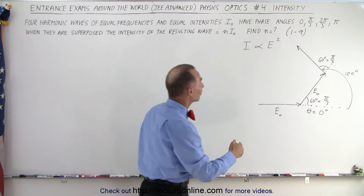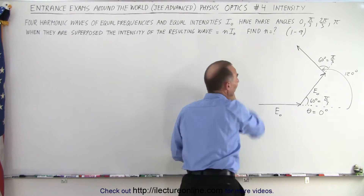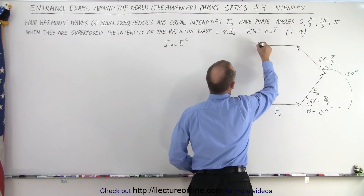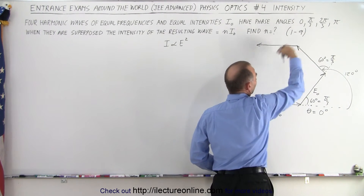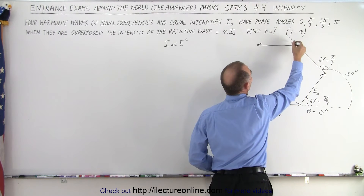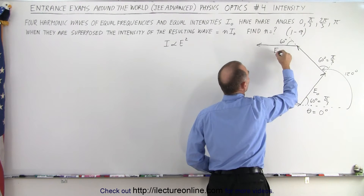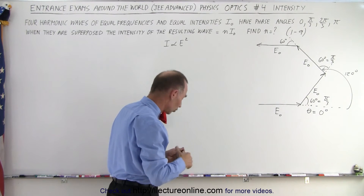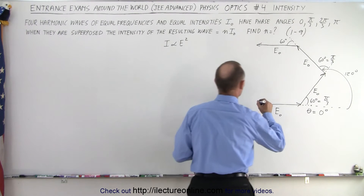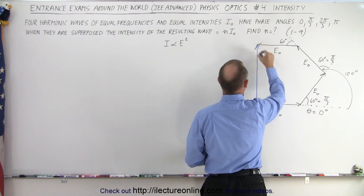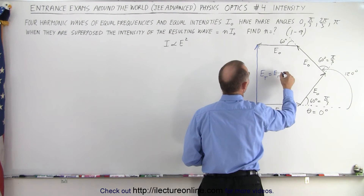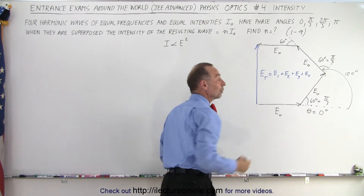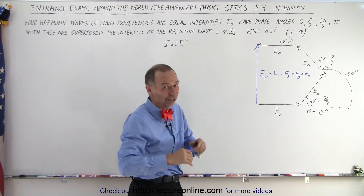Finally, we have a fourth phasor which makes an angle of 180° (π) with the initial phasor, or 60° with respect to the third phasor, and its magnitude is also E₀. The total phasor E_total equals E1 + E2 + E3 + E4, added vectorially — not by magnitude.